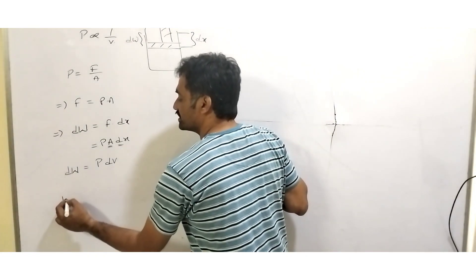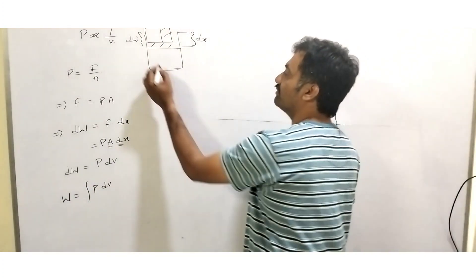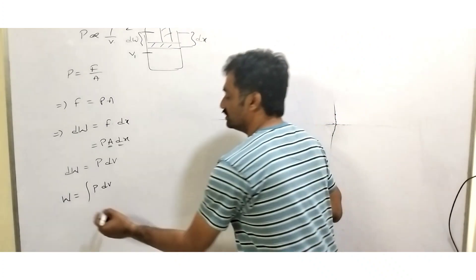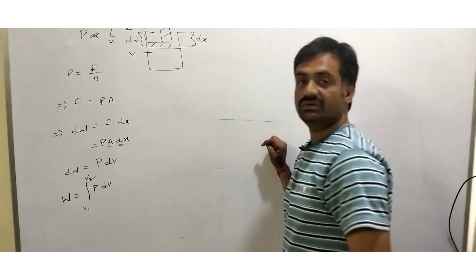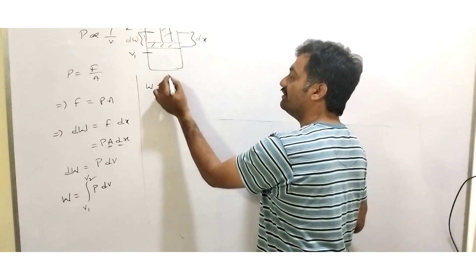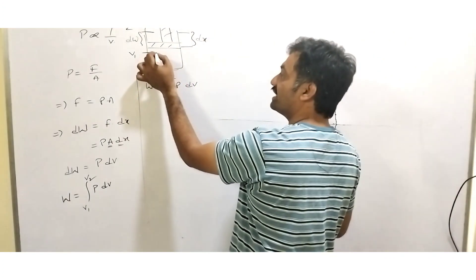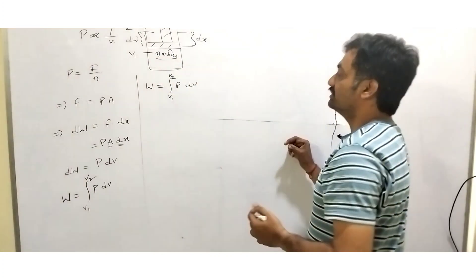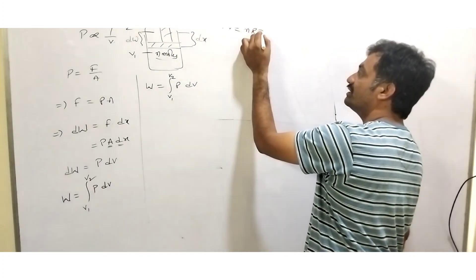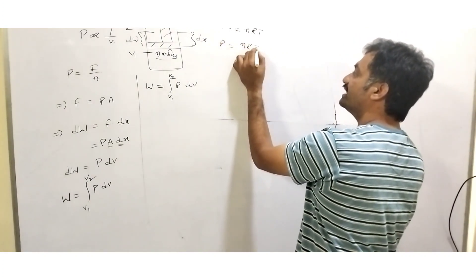For the complete change, we integrate this equation where W equals integration of P into dV. Let us consider the initial volume is V1 and the final volume is V2, so the limits are V1 to V2. Work done equals integration from V1 to V2 of P dV. When we consider the ideal gas equation, since we have n moles of ideal gas, PV equals nRT, so P equals nRT by V.